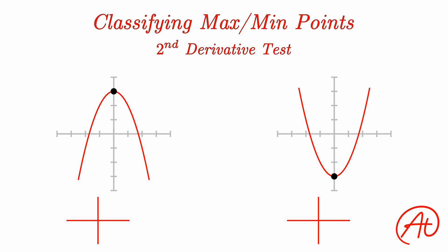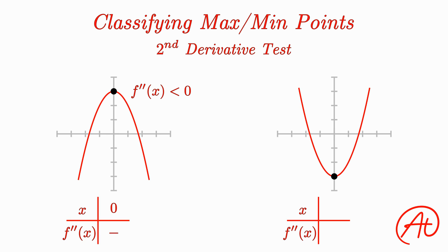How about the second derivative test? The second derivative tells you which way the curve is bending at a specific point. So instead of plugging in points to the left and right of the possible max or min, we can directly plug in the x-value of the max or min into the second derivative to classify it. If you get a negative value, the curve is concave down at this point and must be a maximum. If the second derivative is positive, it is concave up and must be a minimum. This test is easier because you only plug in one point, but it does require you to take an additional derivative.